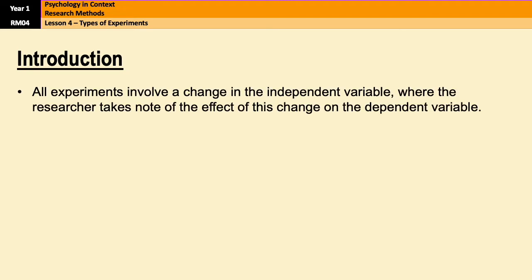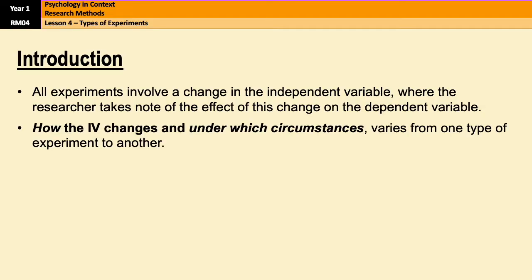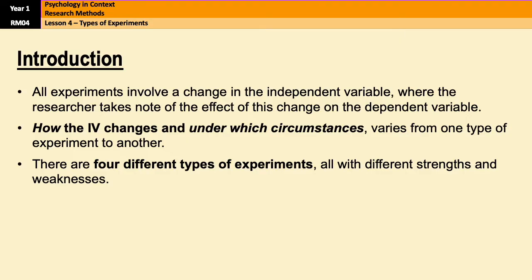So just as a quick recap from the very beginning of Research Methods. All experiments involve a change in the independent variable and then the researcher takes note of the effect of this change on the dependent variable. However, how the IV changes and under which circumstances it changes varies from one type of experiment to another. There are four types of experiments that you need to know about for A-level psychology. Each one of these has got its own strengths and limitations that you need to know about.